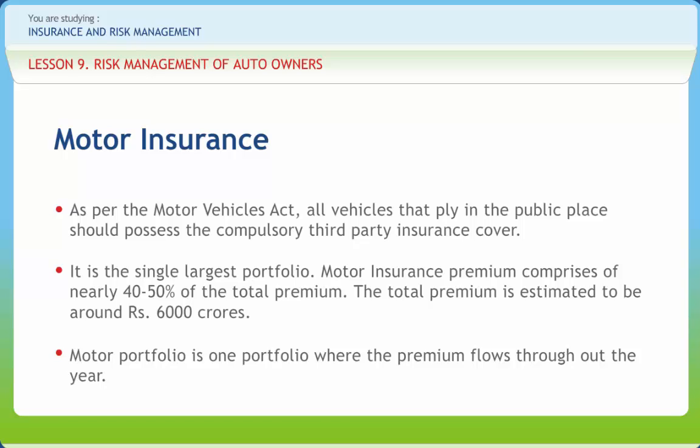Risks covered include own damage and third-party liability. Vehicles covered under insurance include private cars, motorcycles, and commercial vehicles such as goods carrying vehicles, passenger carrying vehicles, miscellaneous vehicles, ambulances, bulldozers, road rollers, etc.